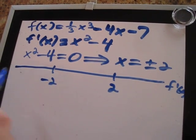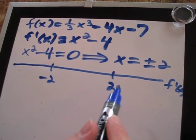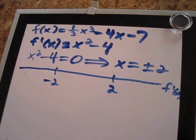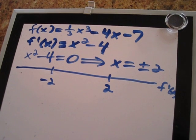We have an interval from negative infinity to negative 2, an interval from negative 2 to 2, and an interval from 2 to infinity. And what we do is we plug in a value of x on each interval into f prime of x and find its sign.